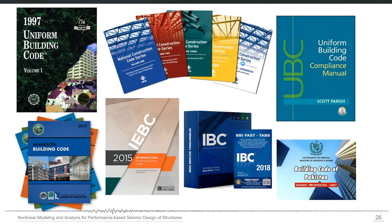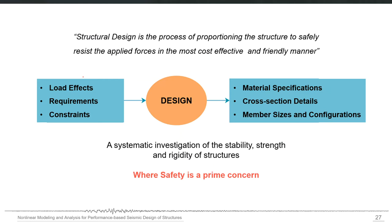The primary idea behind structural design prescribed in these building codes is that it should be a process of proportioning the structure to safely resist the applied forces in the most cost-effective and user-friendly manner. You have load effects and requirements and constraints, and the design should result in material specifications, cross-section details, member sizes, and configurations. Design is a systematic investigation of the stability, strength, and other properties of the structure.